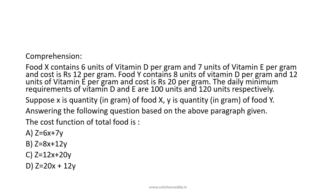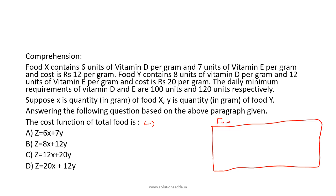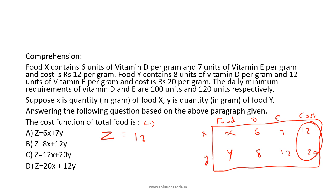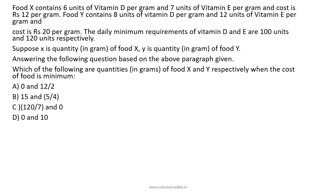The next question asks us to formulate the cost function. Using the table: Food X costs 12 per gram and Food Y costs 20 per gram. So the cost function is Z = 12x + 20y. From the options, option C — Z = 12x + 20y — is the correct answer.